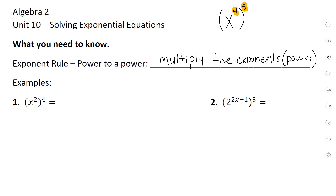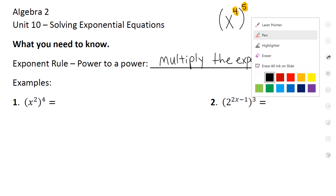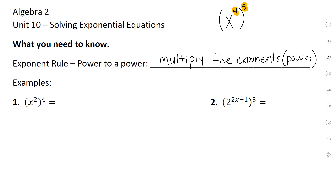Let's do some examples. We have an exponent raised to another exponent. According to the exponent rule, what is our answer? X to the power of eight — we multiply them.